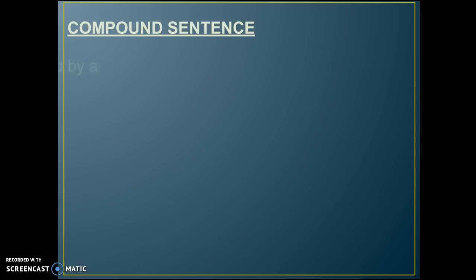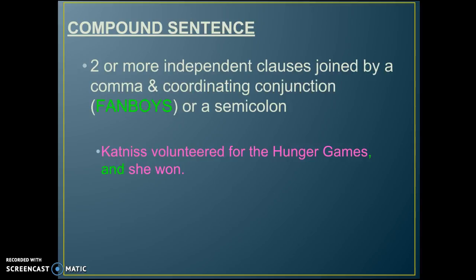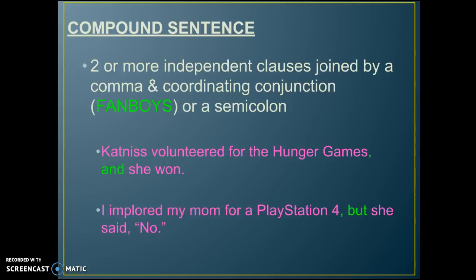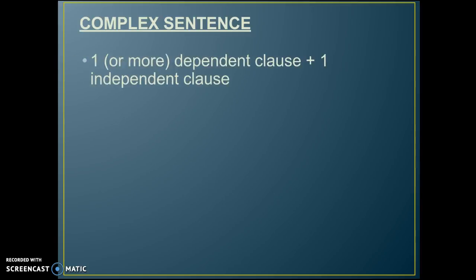A compound sentence, as we've already learned, is two or more independent clauses joined by a comma and coordinating conjunction — remember the coordinating conjunctions by the acronym FANBOYS — or joined by a semicolon. For example: 'Katniss volunteered for the Hunger Games and she won.' 'I implored my mom for a PlayStation 4 but she said no.' These are both compound sentences with two subjects and two predicates.